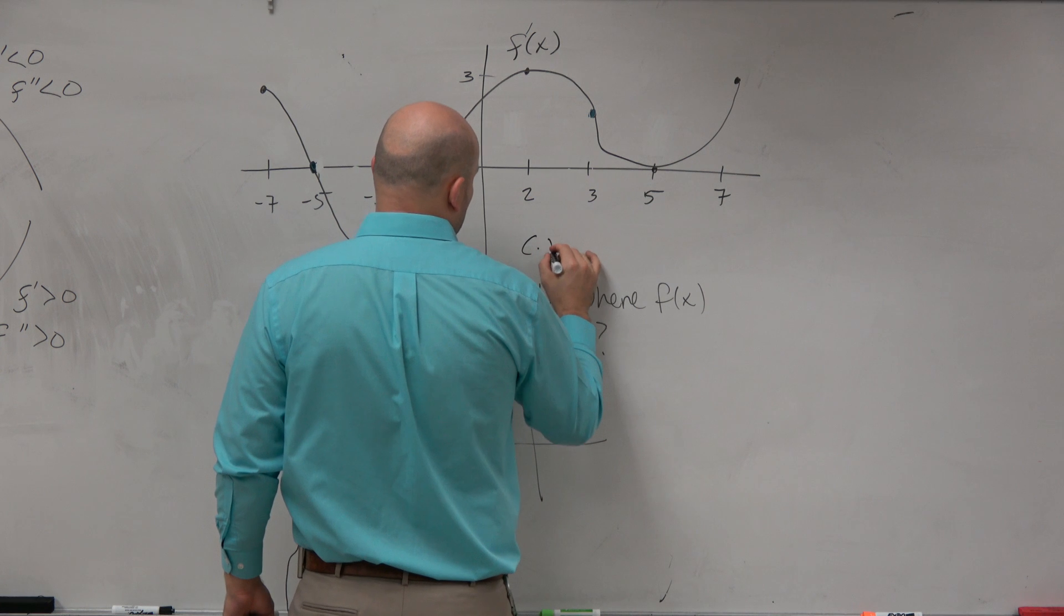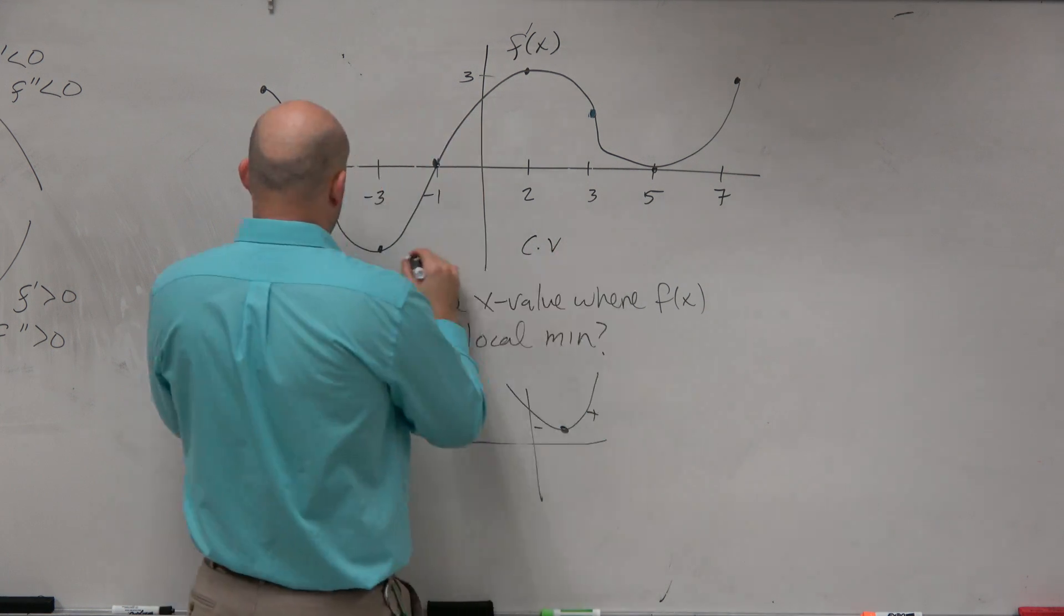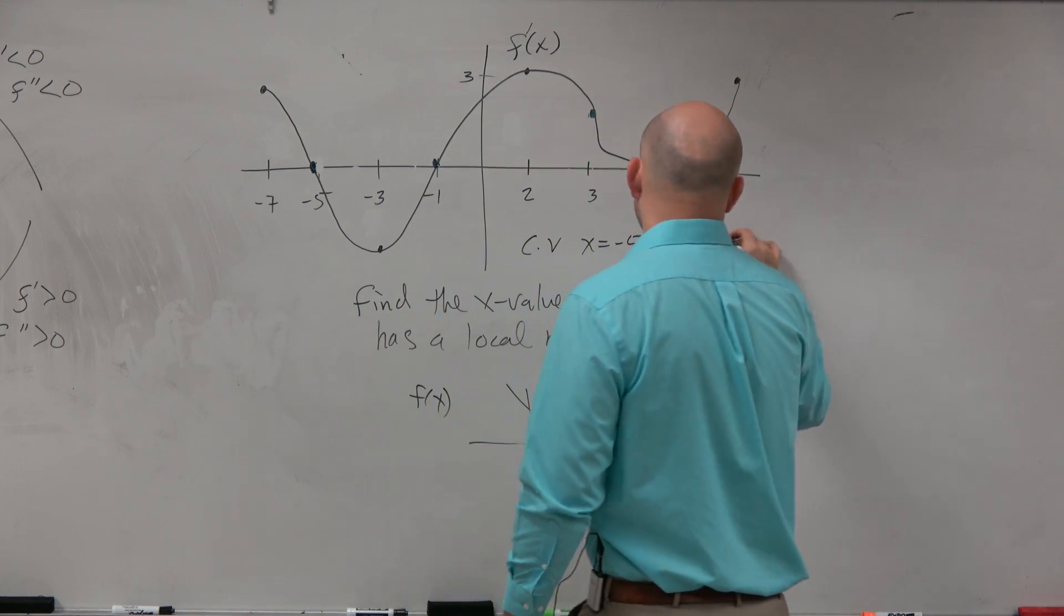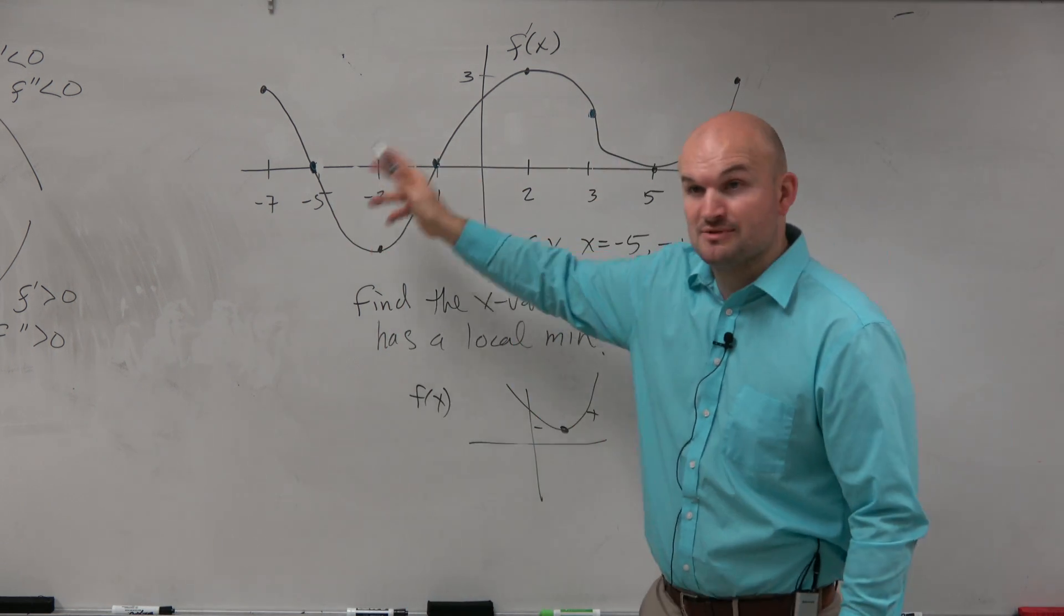Well, we can determine those critical values are at x equals negative 5, negative 1, and positive 5. Those are the x-intercepts of the derivative graph.